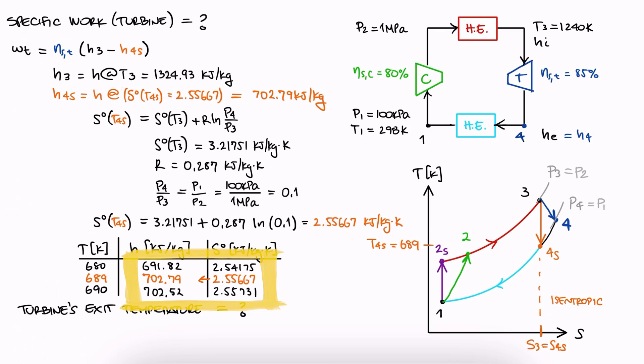Regardless, with interpolation, we find H4s. We substitute all of these values to find the work of the turbine.